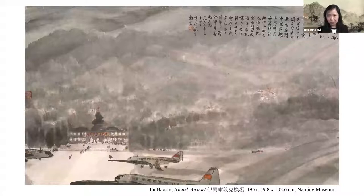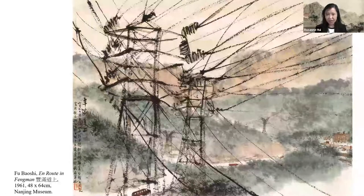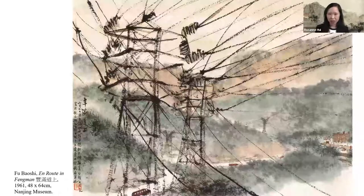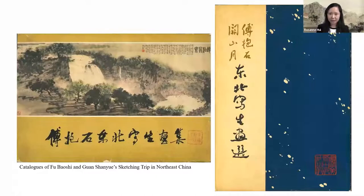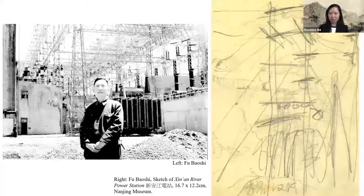I'm going to show you a rare example — En Route in Feng Man, in the collection of the Nanjing Museum. This is an interesting exception in terms of composition and a showcase of Fu Baoshi's virtuous command of the line. This piece was inspired during an official trip for Fu Baoshi and Guan Shan Yue to sketch in northeast China, beginning in June 1961 and lasting four months. Fu Baoshi left behind literature regarding how electric cables came to be the main subject of this piece.